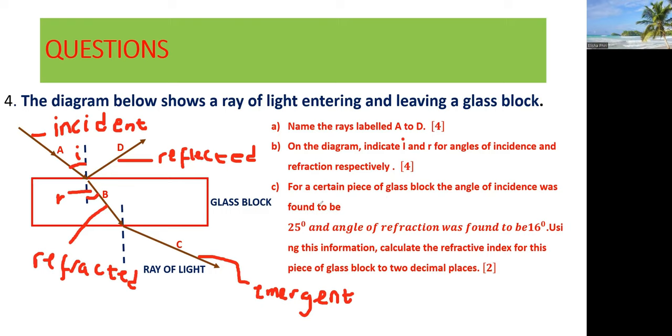Let's move on to C. For a certain piece of glass block, the angle of incidence was found to be 25 degrees, and the angle of refraction was found to be 16 degrees. Now using this information, calculate the refractive index.